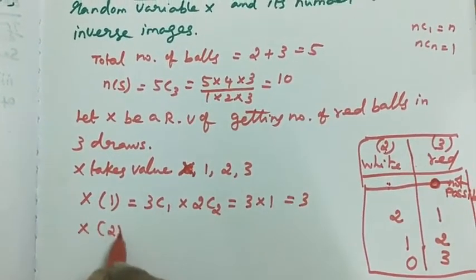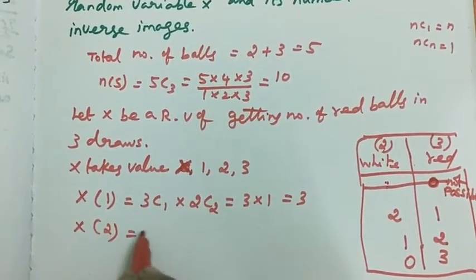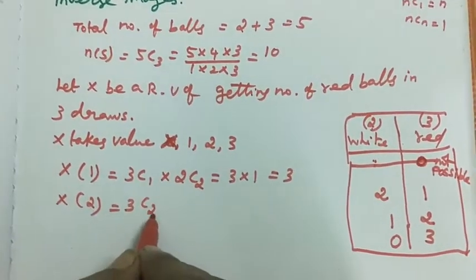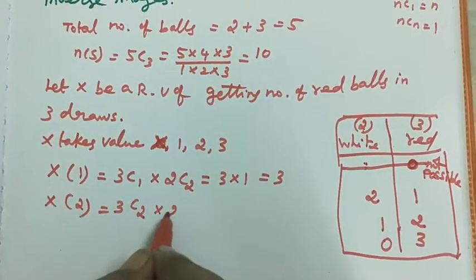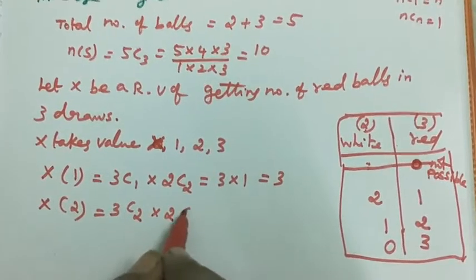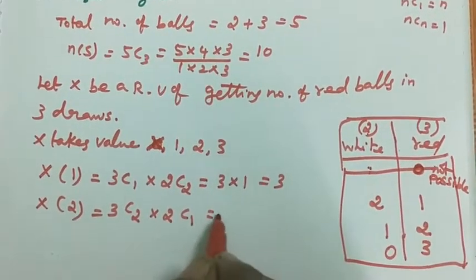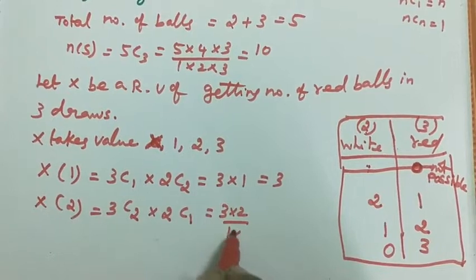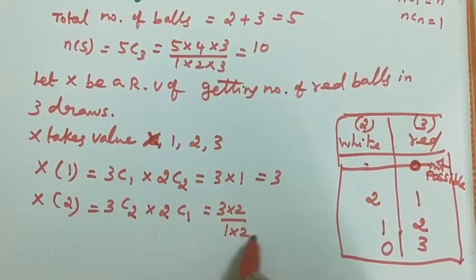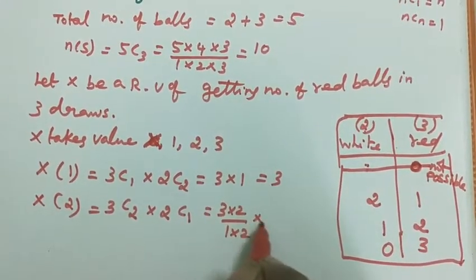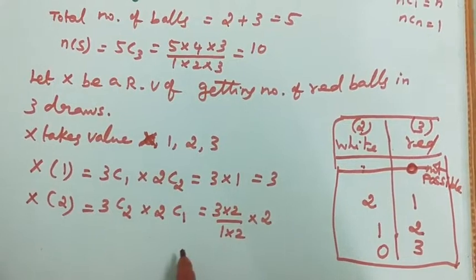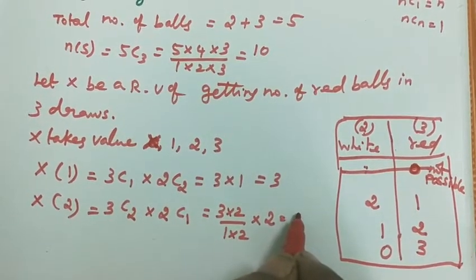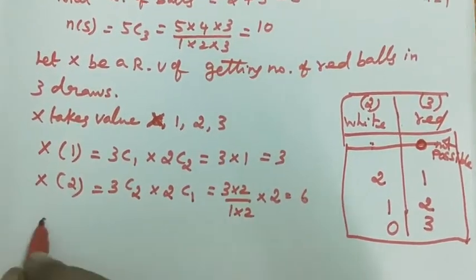Next, for x=2: out of 3 red balls we take 2, and out of 2 white balls we take 1. So 3C2 into 2C1 equals (3 into 2 divided by 1 into 2) into 2. The 2s cancel, giving 3 into 2 equals 6.